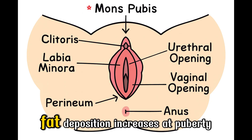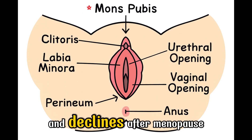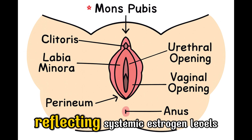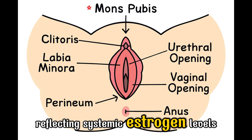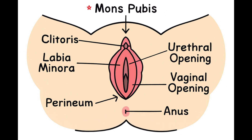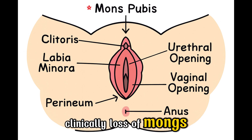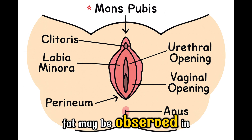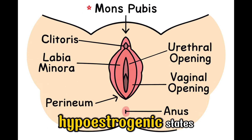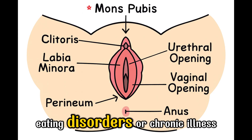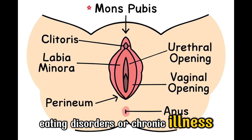Fat deposition increases at puberty and declines after menopause, reflecting systemic estrogen levels. Clinically, loss of mons fat may be observed in hypoestrogenic states, eating disorders, or chronic illness.